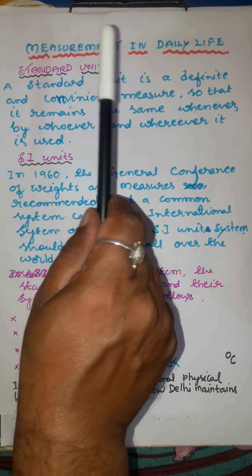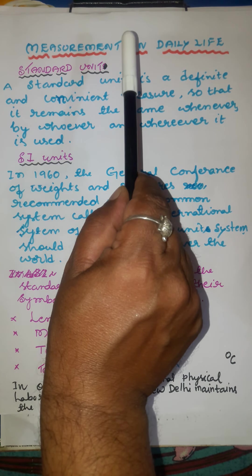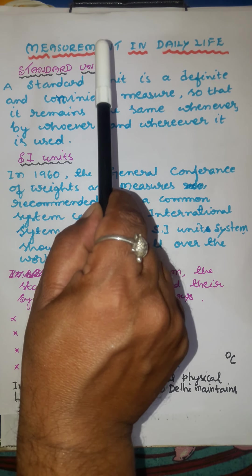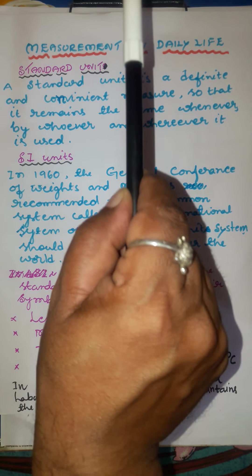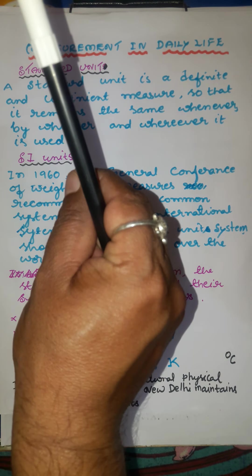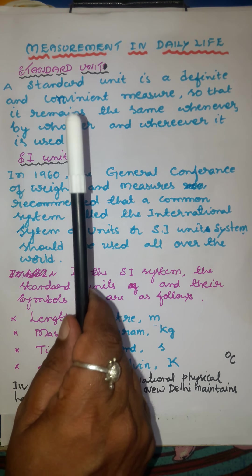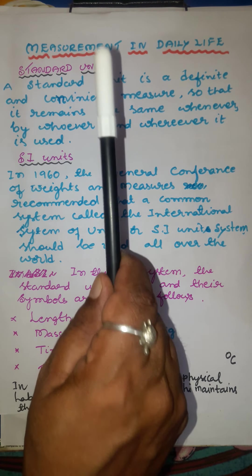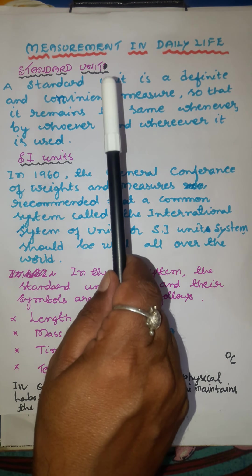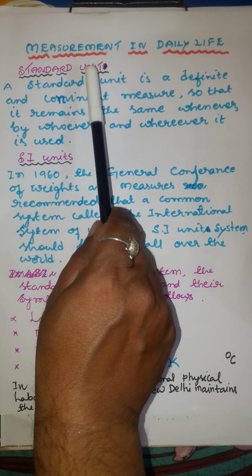In everyday life, measurements are often necessary. For instance, the amount of cloth required for a dress, the weight of grocery and the vegetables to be bought, the amount of sugar needed for a cup of tea, or the amount of petrol to fill in a car are all measured. To make accurate measurements in all such cases, we make use of a standard unit.